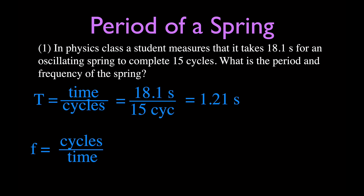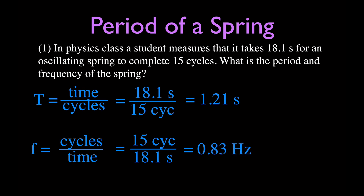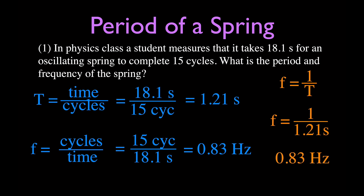We usually just write seconds for the period — so the period is 1.21 seconds. For the frequency, we had 15 cycles in 18.1 seconds, and that means we have a frequency of 0.83 hertz. The unit for frequency in the metric system is hertz, which is the number of cycles per second. You can also check: since the period and frequency are inversely proportional, frequency equals 1 over the period. So 1 divided by 1.21 also gives 0.83 hertz — the same value using different equations.